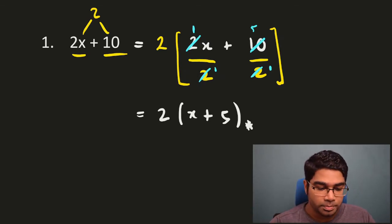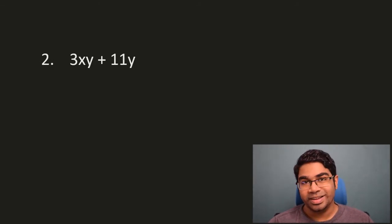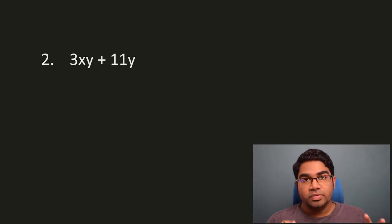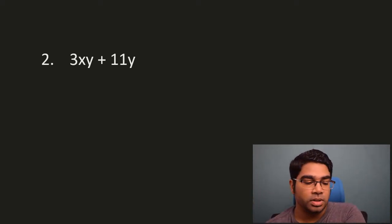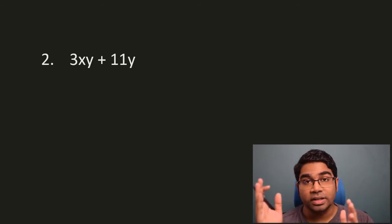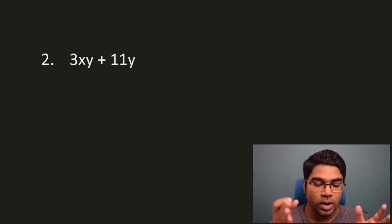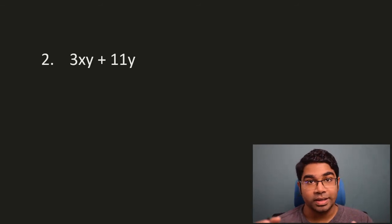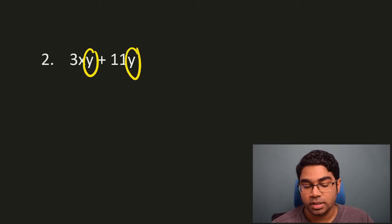Once again, we have two terms here: 3xy and 11y. The highest common factor — first we look at the numbers, then the variables. The numbers 3 and 11 have no common factors. Whereas for the variables x, y and y, there is a common factor, and that common factor is the variable y.